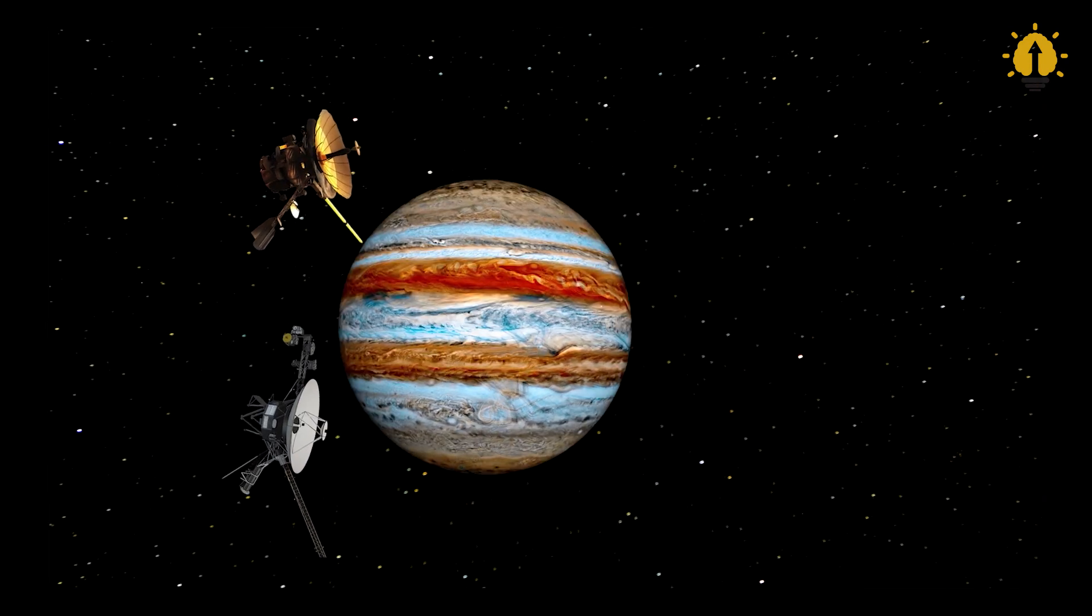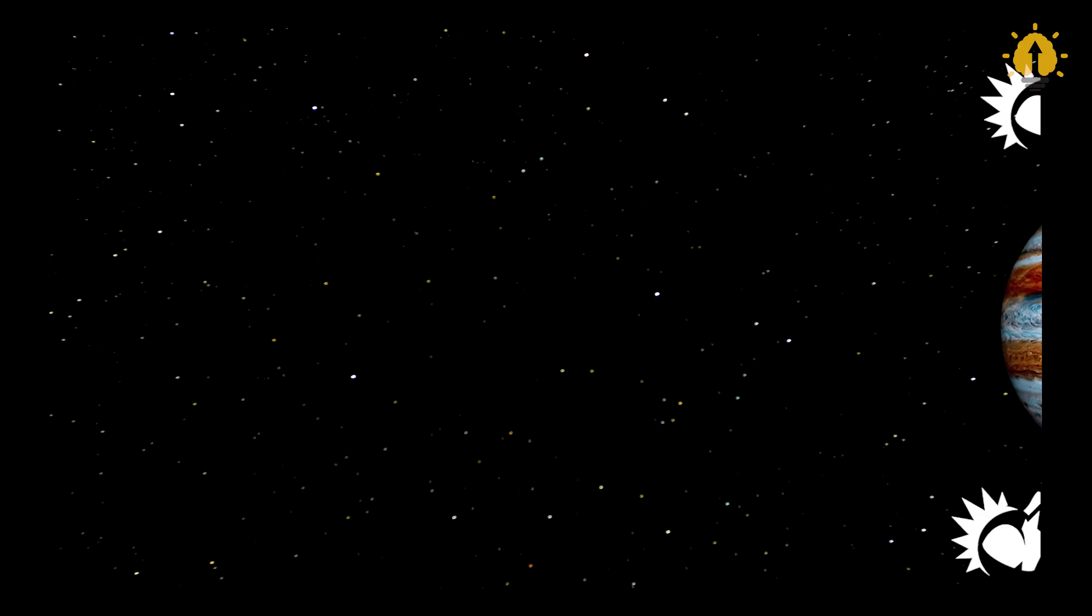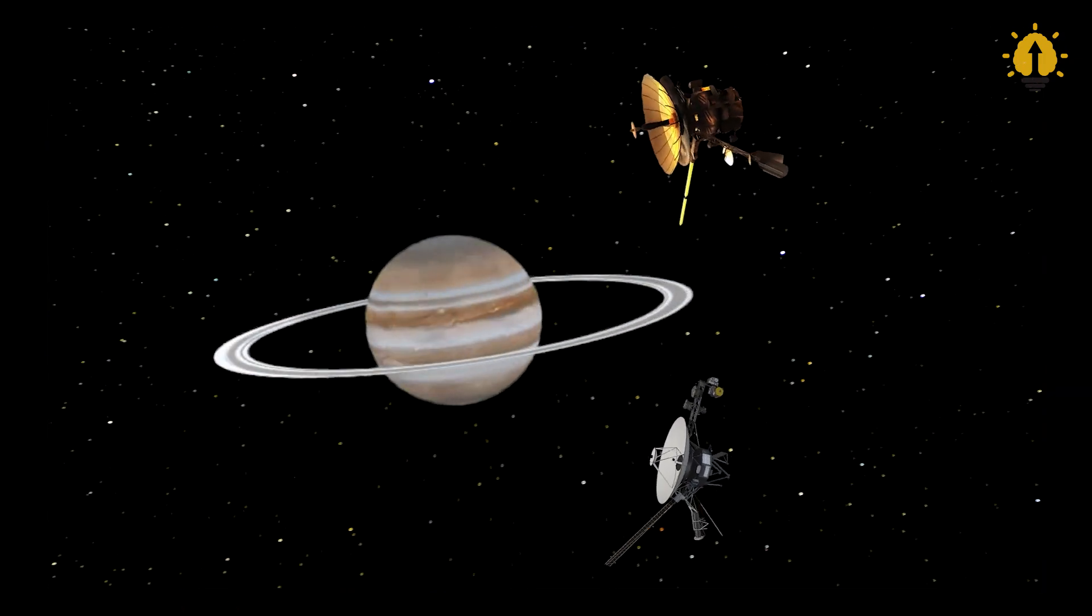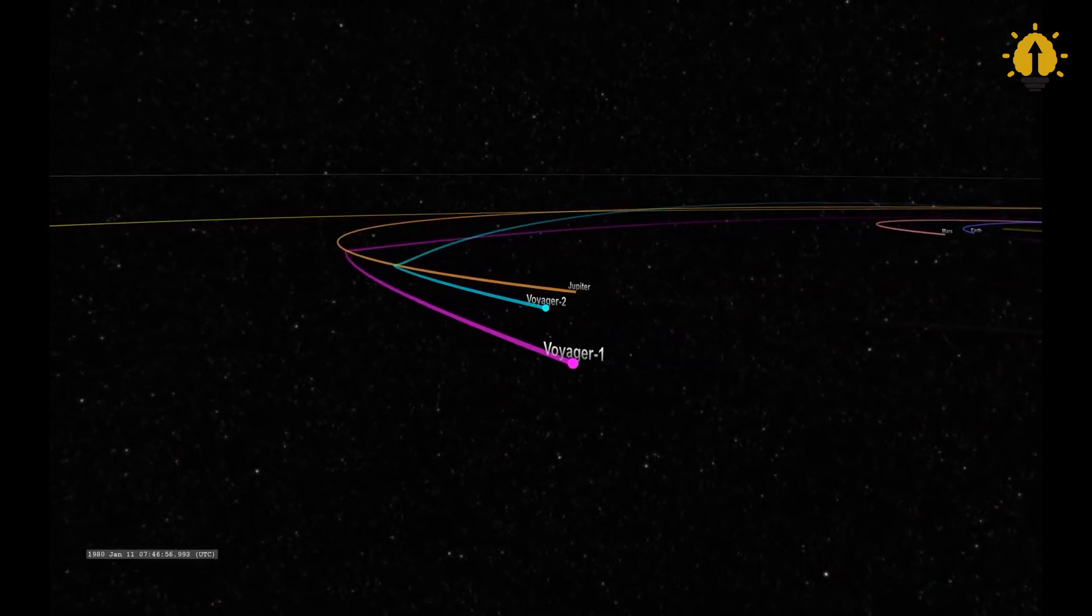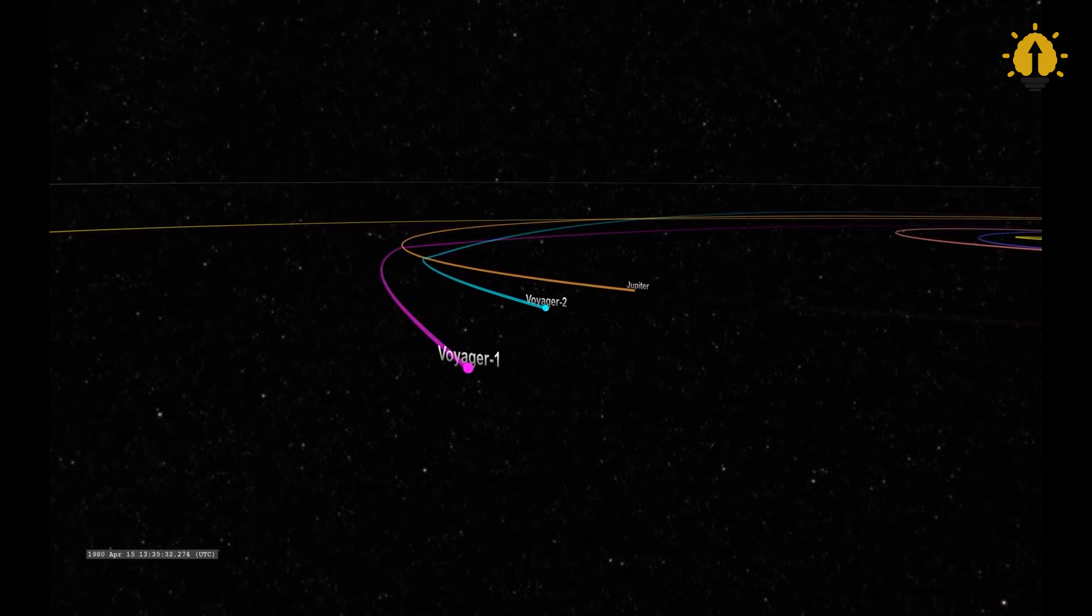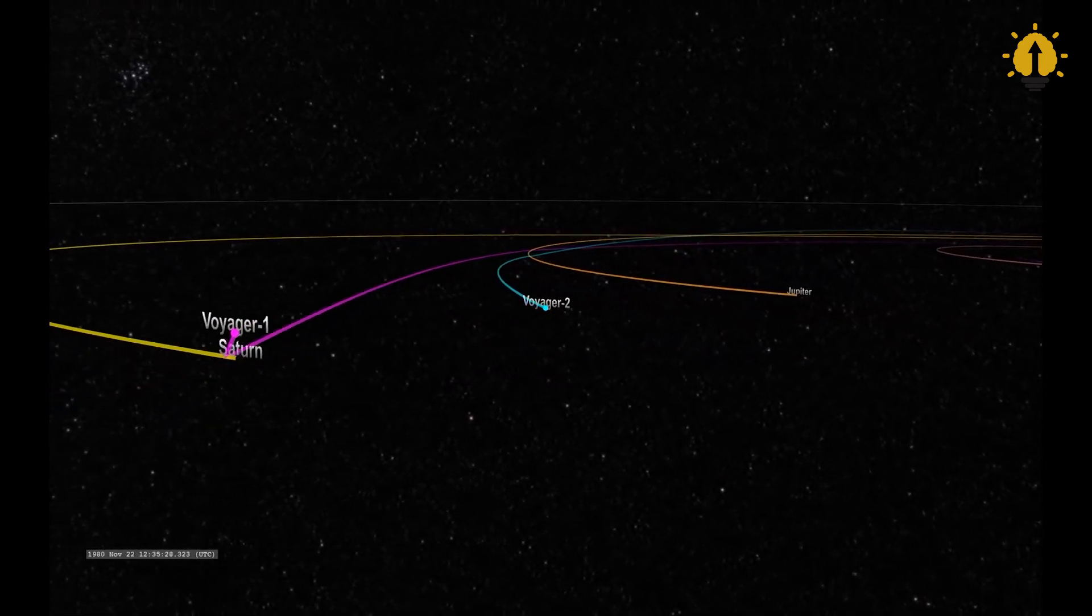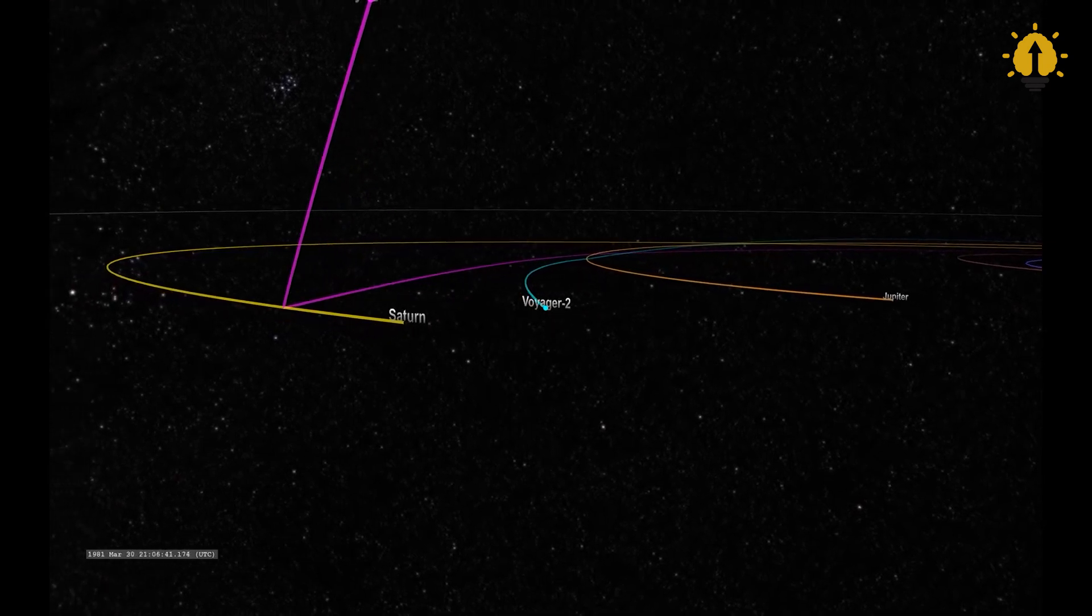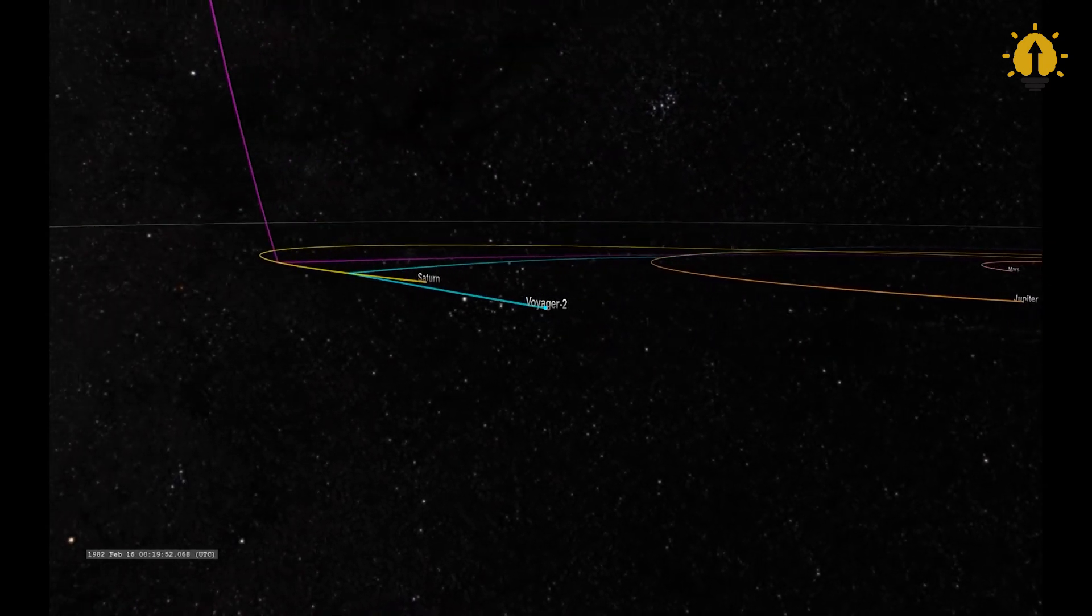As the Voyagers departed from Jupiter, they received a gravity assist that provided them with a farewell kick, propelling them towards Saturn. Without this vital boost, they would have been unable to escape the Sun's gravitational pull and venture further into space. Voyager 1 and Voyager 2 soon went their separate ways, each heading towards new frontiers.